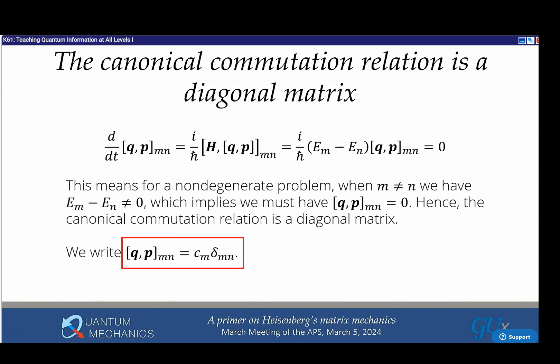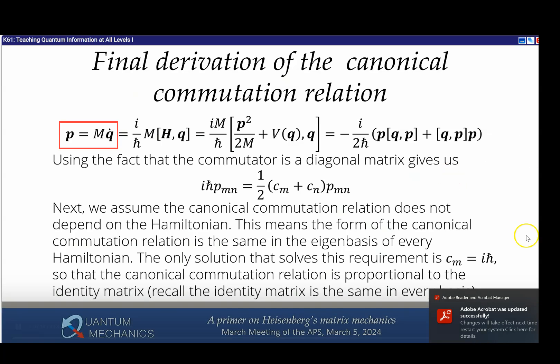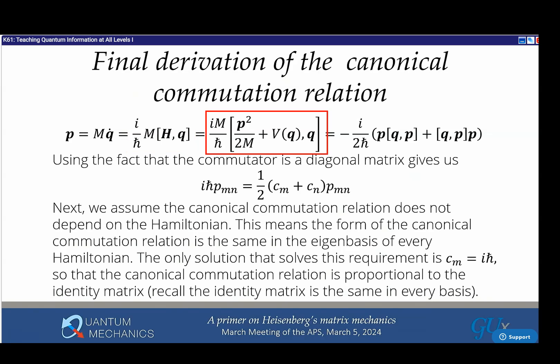It has a diagonal matrix element c_m times δ_mn. Now the final piece: momentum is m times q-dot. We use Heisenberg equation of motion to calculate q-dot as the commutator of H with q. This gives the Leibniz rule for a commutator, but the commutator is a diagonal matrix. Writing this out in matrix elements, we get i*h-bar*p_mn is one half (c_m + c_n) times p_mn.